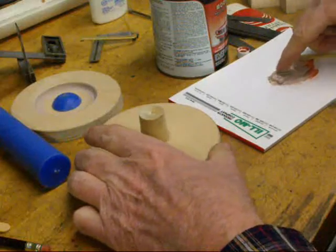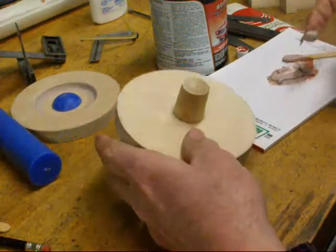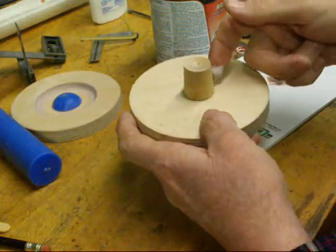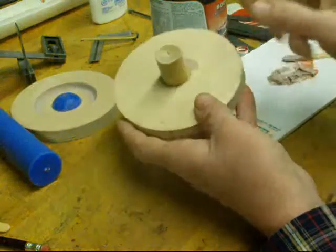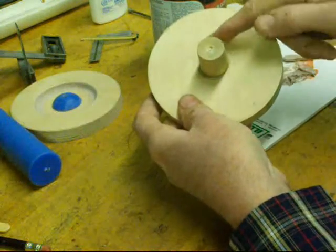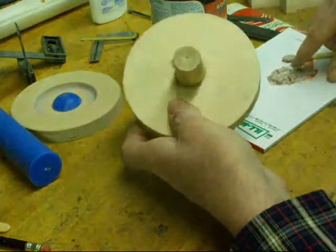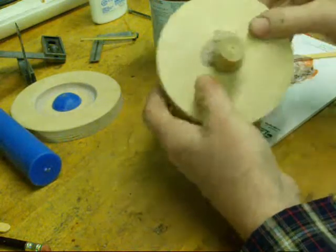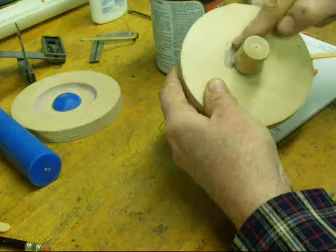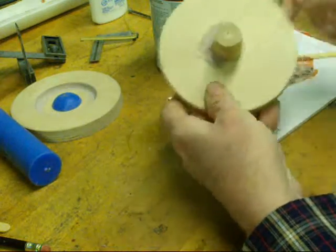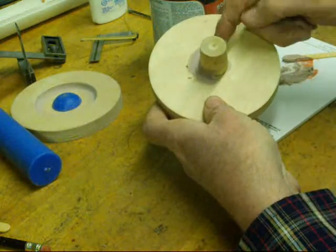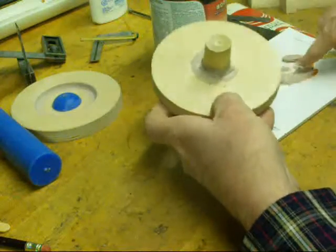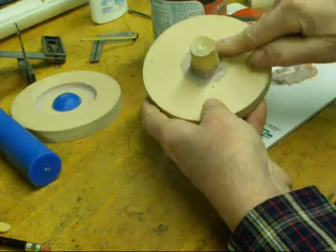Alright, I've mixed up a batch of this polyester body filler here, or Bondo, and all I'm going to do is wipe it in with my fingertip. It's a little sloppy. You only got a couple minutes to work on this, and it depends on how fat your fingers are, that's going to determine what your radius is in there.